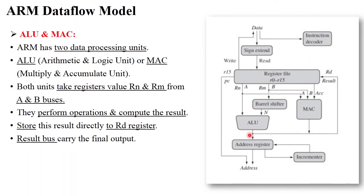The next components are ALU and MAC. The ARM processor has two data processing units: the Arithmetic and Logical Unit (ALU) and the Multiply and Accumulate (MAC) unit. Whatever information is passed by the A and B buses is processed in the ALU. For example, RN equals 2 and RM equals 2 — the 2 plus 2 operation is computed in the ALU, giving the result 4. This result is stored in the RD register, carried by the result bus, and then stored back into the register file, from which the register sends the data to memory.